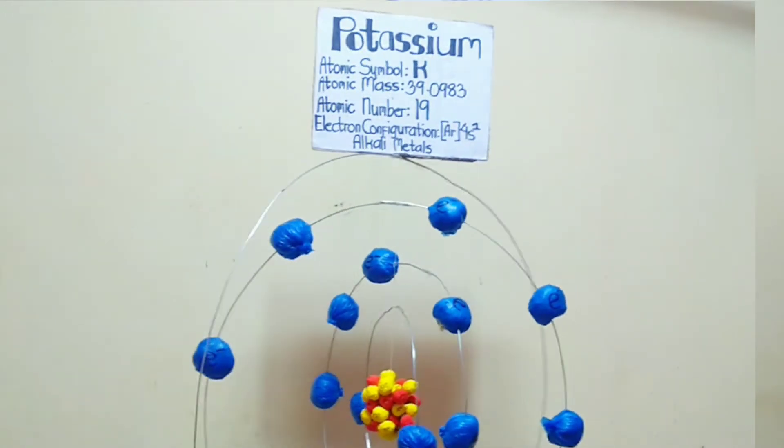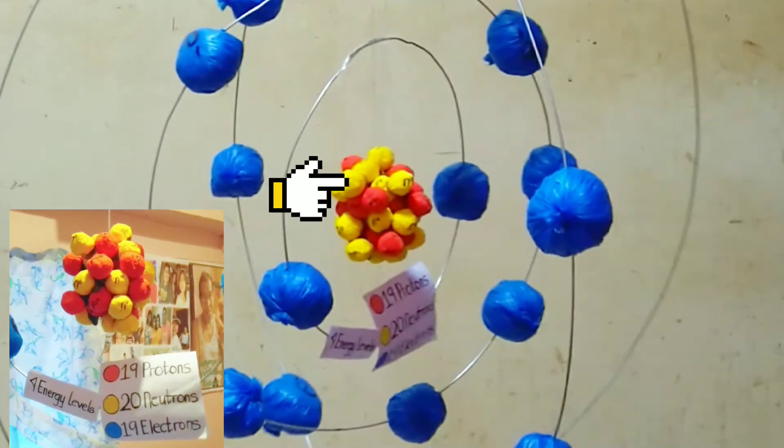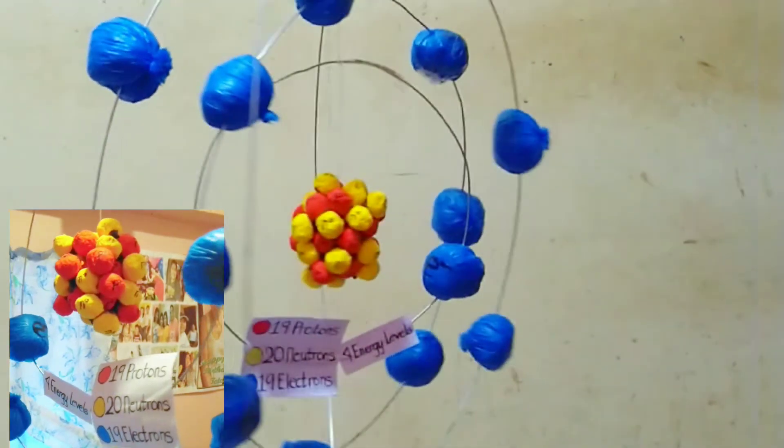As we can see, potassium has subatomic atoms. The red represents 19 protons, the yellow represents 20 neutrons, and lastly the blue represents 19 electrons.